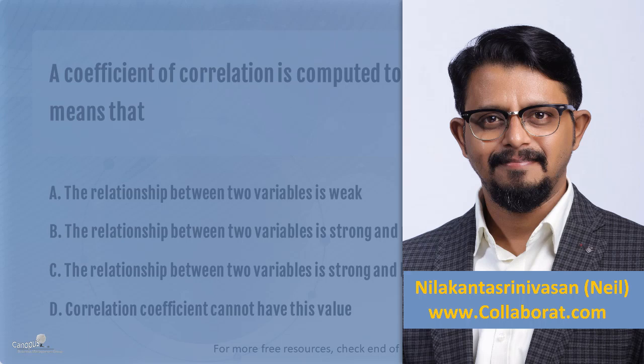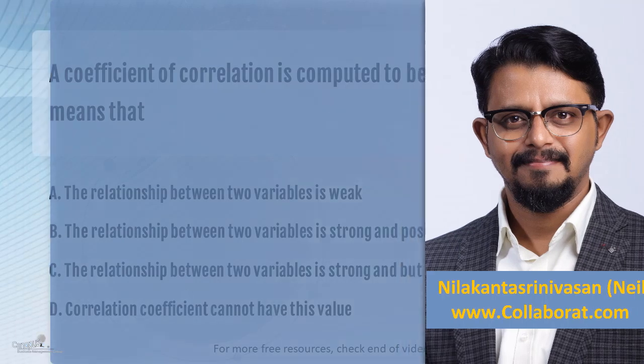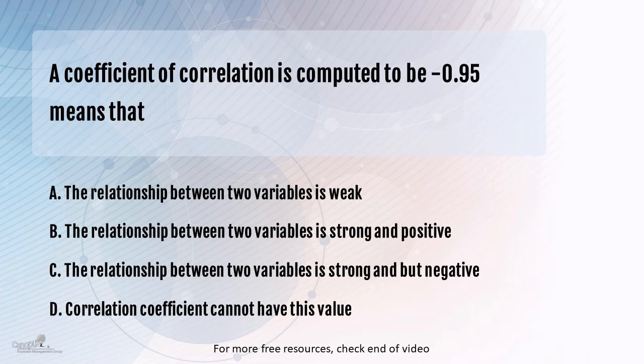Another very interesting question has a little bit of statistics and talks about correlation and regression. The question goes like this: a coefficient of correlation, that is the Pearson R correlation, is computed and the value comes to be minus 0.95. So what does that mean?